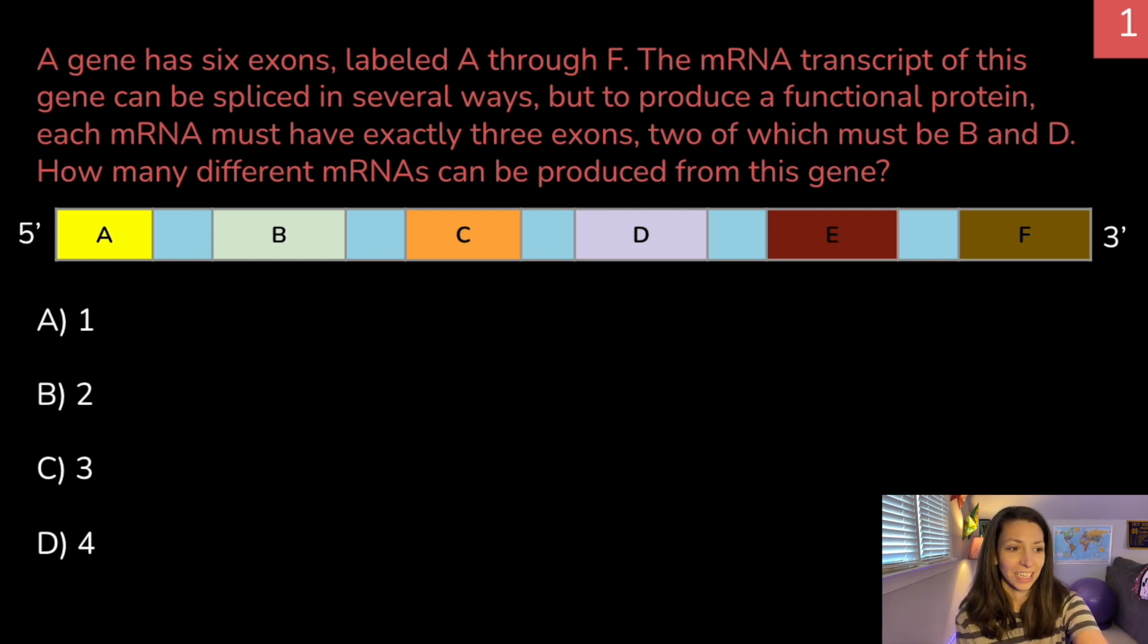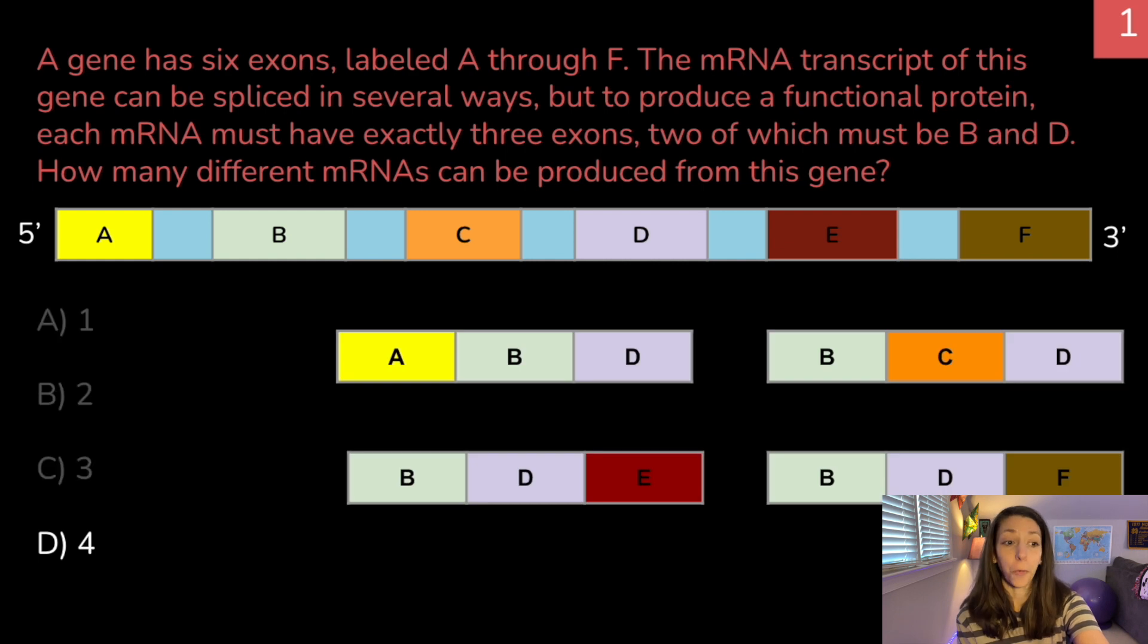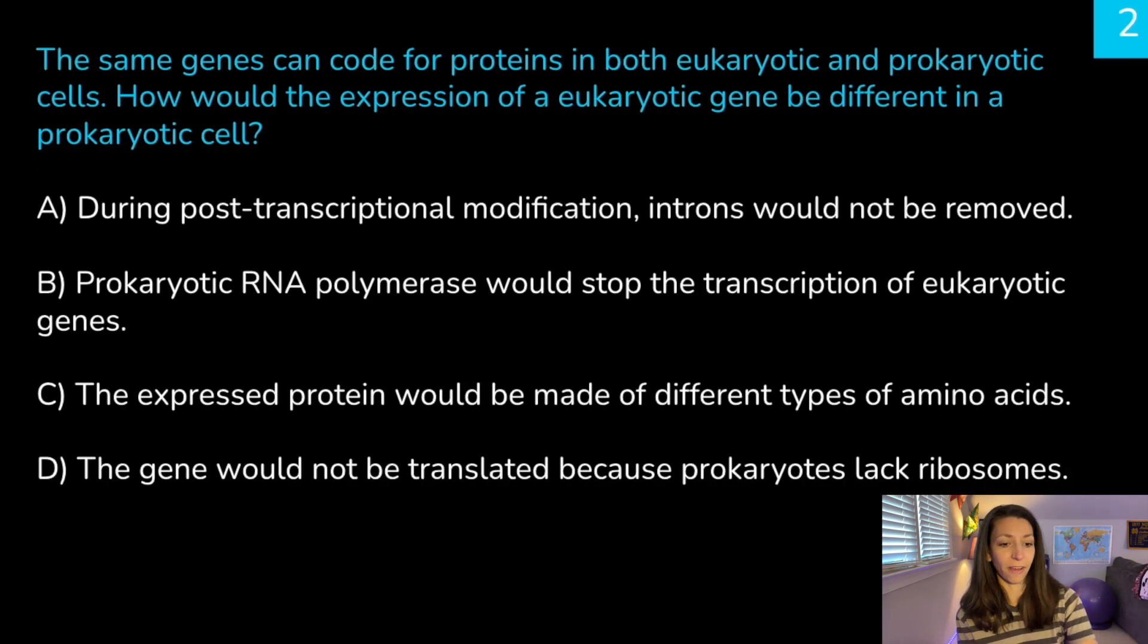The correct answer is four. So there are four possibilities from this particular gene. We can have ABD, we can have BCD, BDE, or BDF. Remember, in the question, it says it has to have exactly three exons, and two of the exons have to be B and D, and they're not going to go in a different order. So these are the options that we are left with.